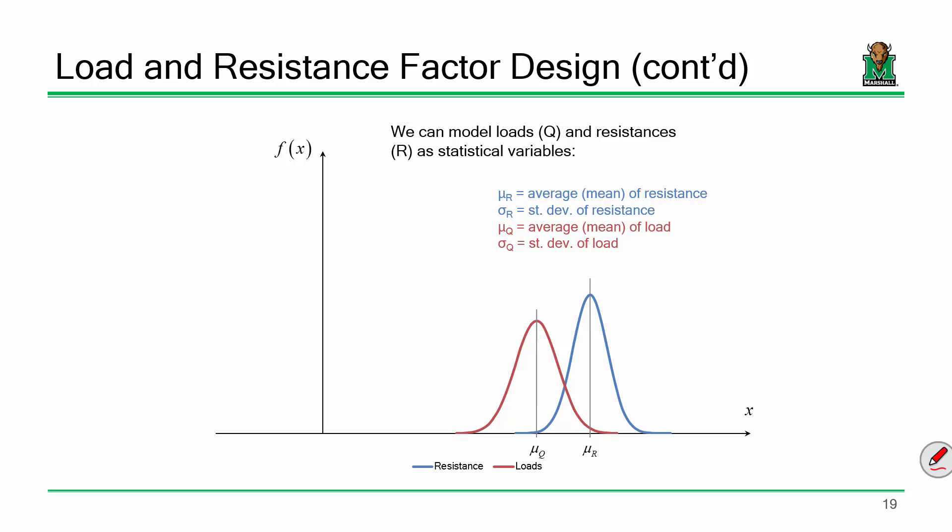You've all had at least some exposure to probability and statistics. You've probably heard of a bell curve, a normal distribution. What you're looking at are normal distributions — I'm just assuming for the sake of discussion that I'm dealing with normal distributions. I'm looking at two distributions: one for assessing the resistance of a given structure, and one for assessing the loads that are on that structure.